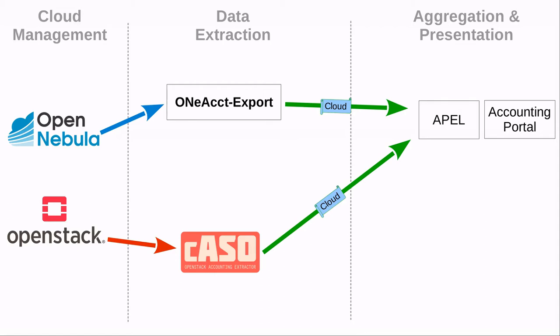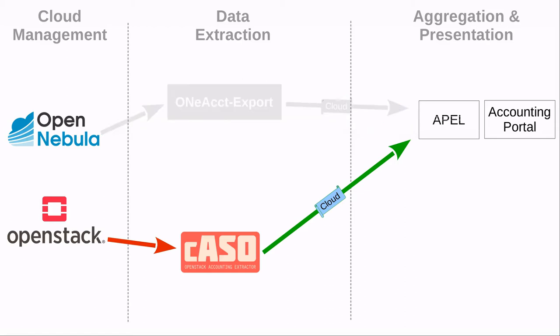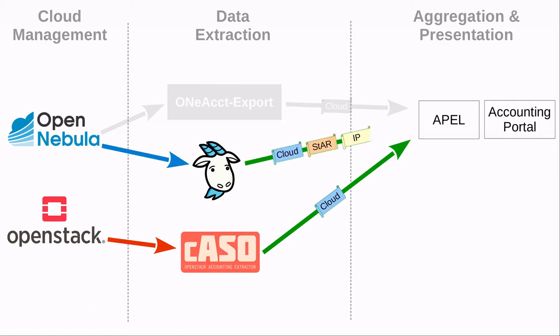When faced with the need to support additional accounting record types, we firstly considered the existing accounting export tool. We actually didn't want to go on supporting it, so we decided to discontinue it and we introduced a new tool — the GOAT, GO Accounting Tool — which has a more modern architecture and was developed straight away to support all the required accounting types.